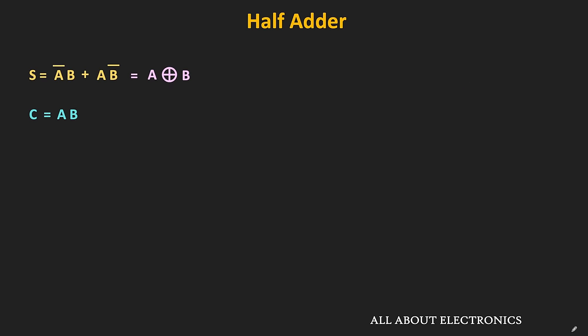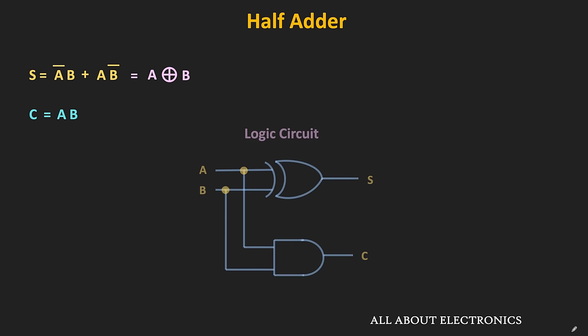Now let us implement these using logic gates. The sum output can be implemented using one two-input XOR gate, while the carry output can be implemented using one two-input AND gate. This is the logic circuit of the half adder.